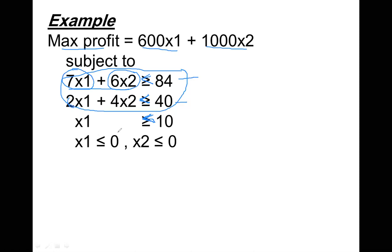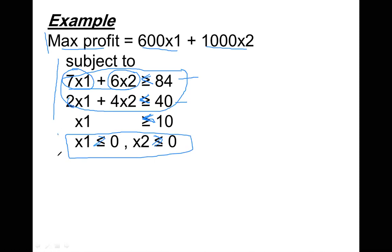We also add from our side non-negative constraints: x1 greater than or equal to 0, x2 greater than or equal to 0. This means the number of machines of Type A and Type B must have non-negative values to guarantee a realistic solution. That completes the revision of how to formulate a problem in the linear programming structure: objective function, subject to structural constraints, plus non-negative constraints.